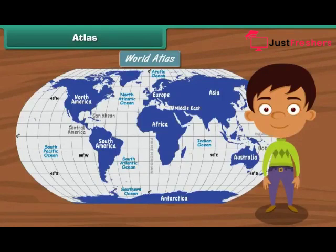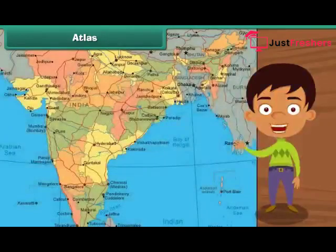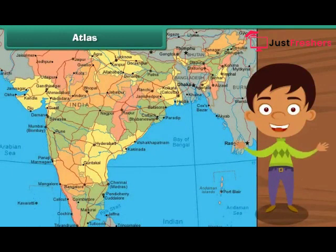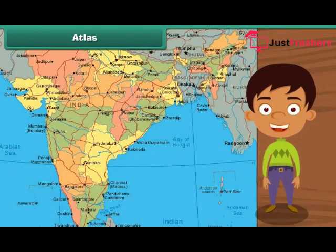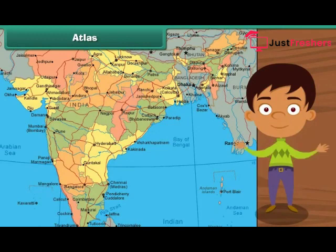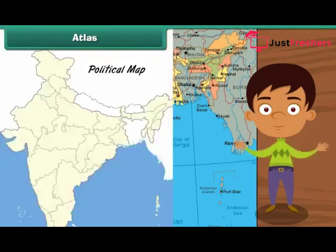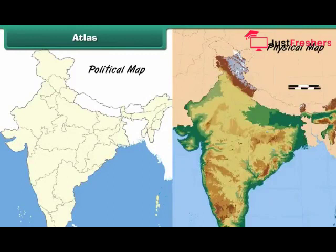An atlas is a collection of maps and charts. The maps in an atlas give geographical information about different parts of the world. The charts in an atlas contain details of specific locations such as population, sea levels, crops produced, etc. Maps are of two types: political and physical. Let us learn about them in detail.